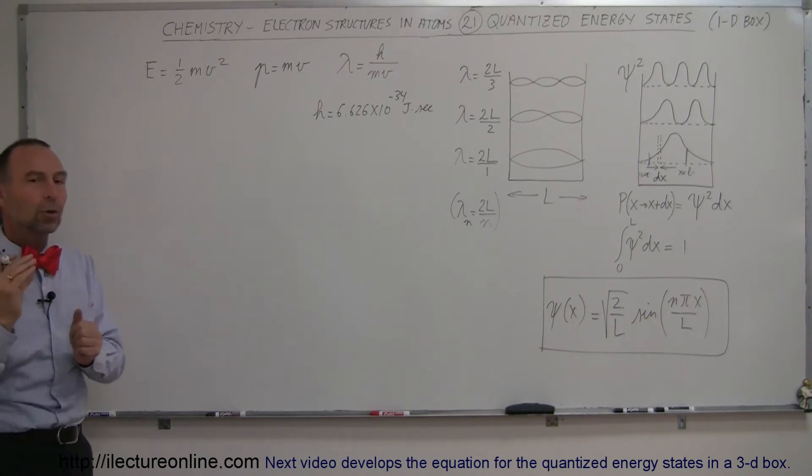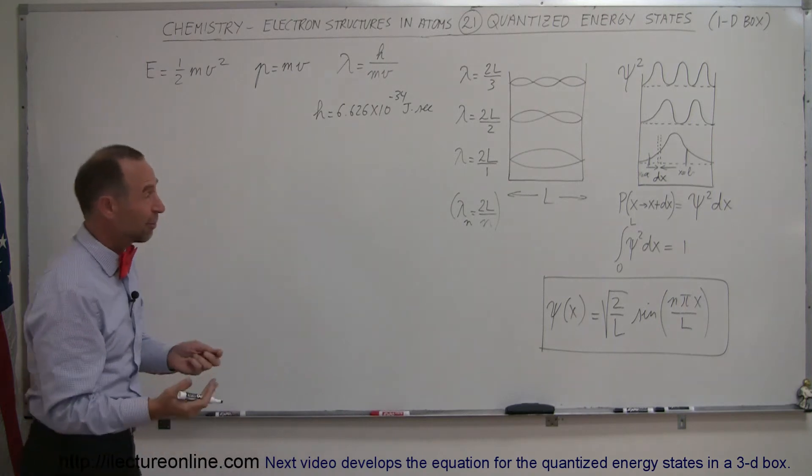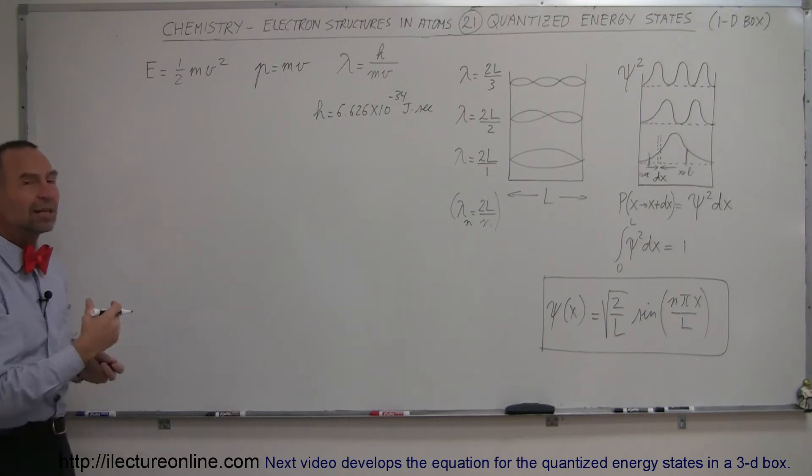So let's define the quantum states of an electron in a one-dimensional box. Again, one-dimensional box is a fictitious box. There's no such thing as a box that only has one dimension, but just for the sake of argument here, so we're able to illustrate how an electron behaves, let's do this.